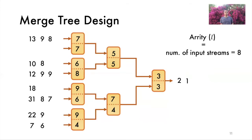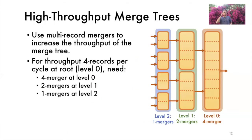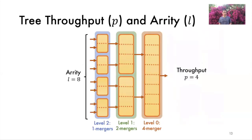We can use multi-record mergers to increase the throughput of merge trees. Specifically, looking at the figure on the right, we can construct the tree that outputs four records per cycle if we put one four merger at the root of the tree, two mergers at the level below it and four one mergers at the leaves. In general, the throughput of the tree will be equal to the throughput of the merger at its root. We denote the tree throughput with the lowercase p. So, as explained in the previous slide, the tree in this example has throughput p equals 4 and an Arity of l equals 8.